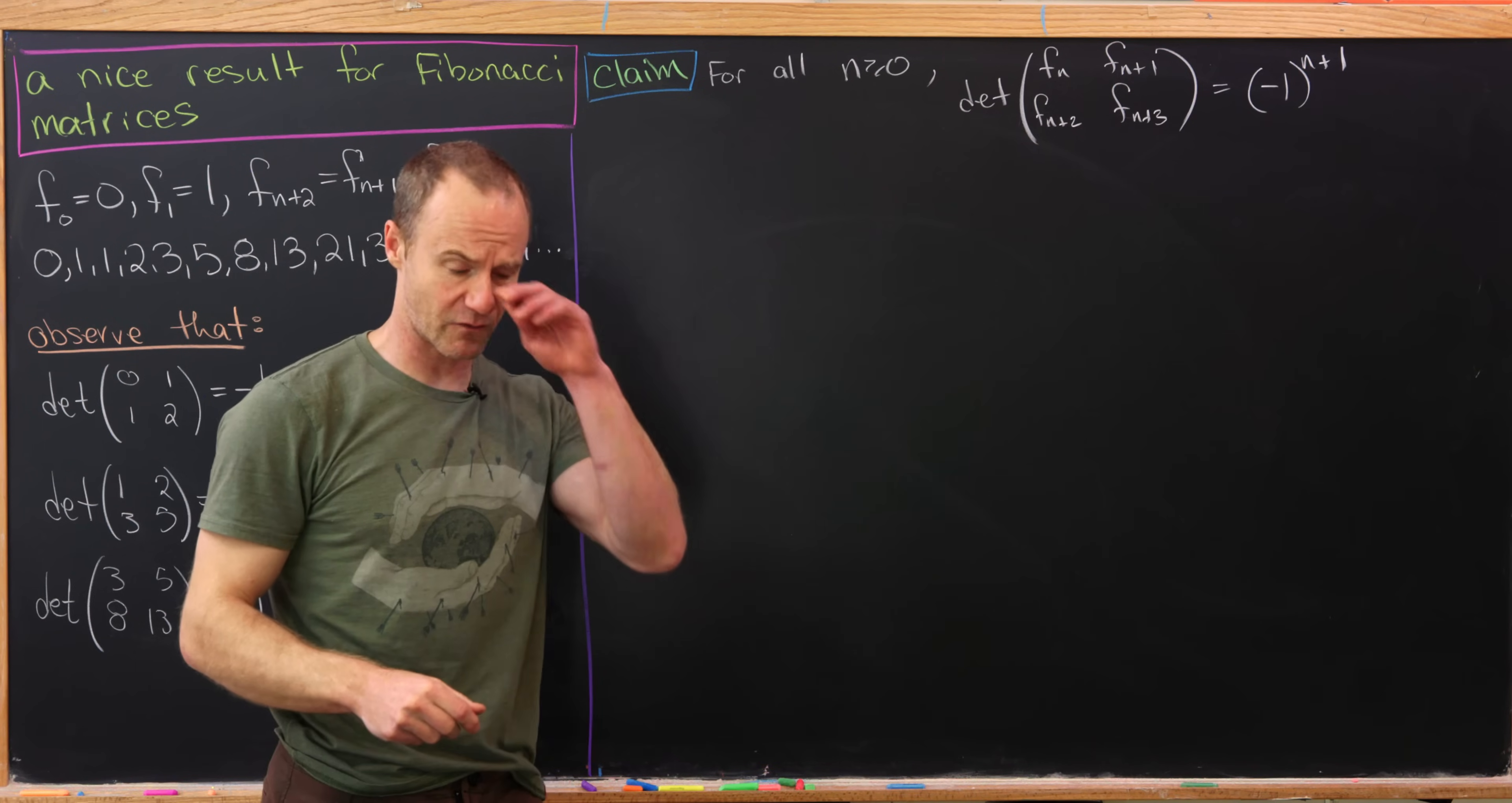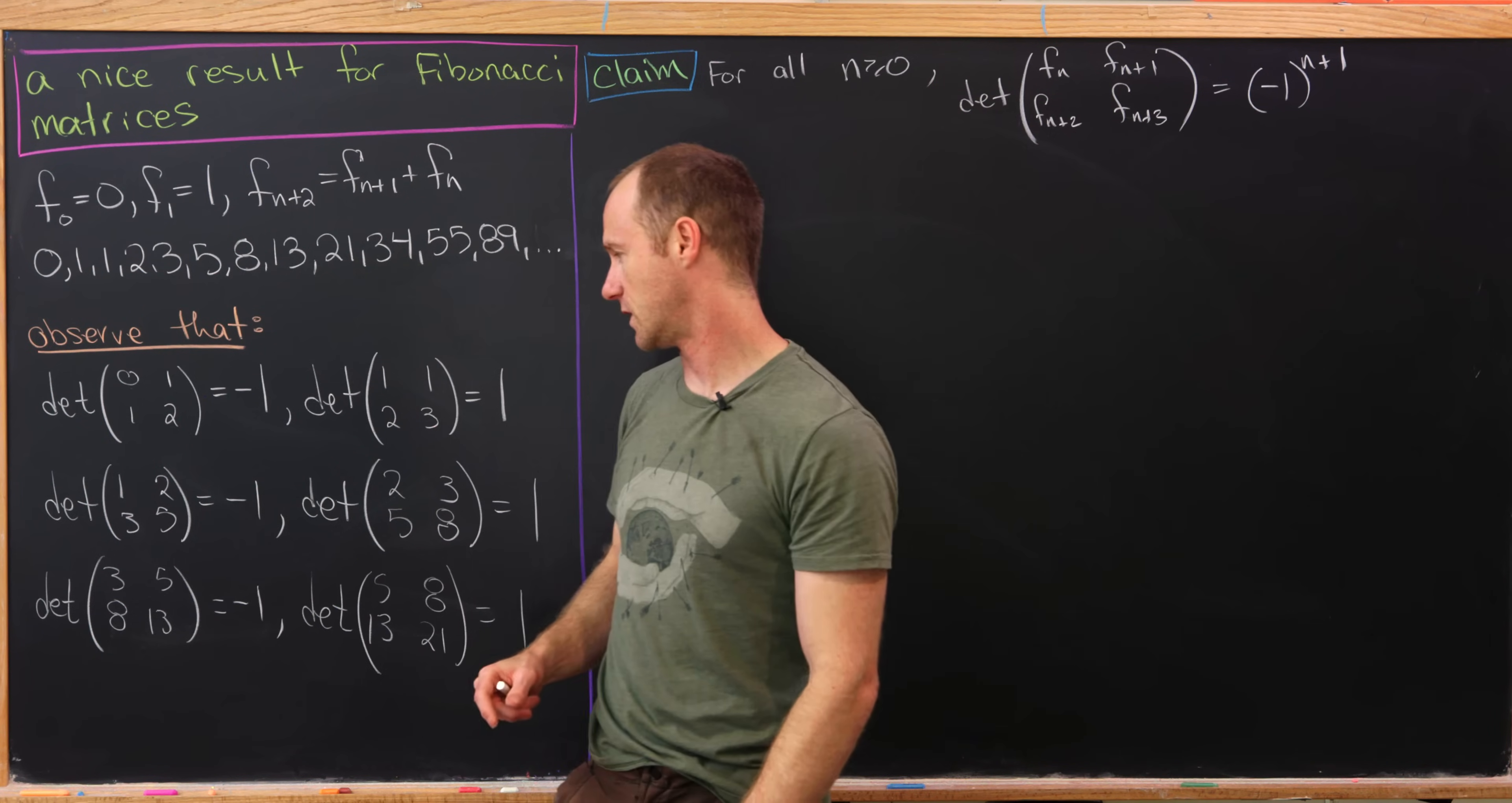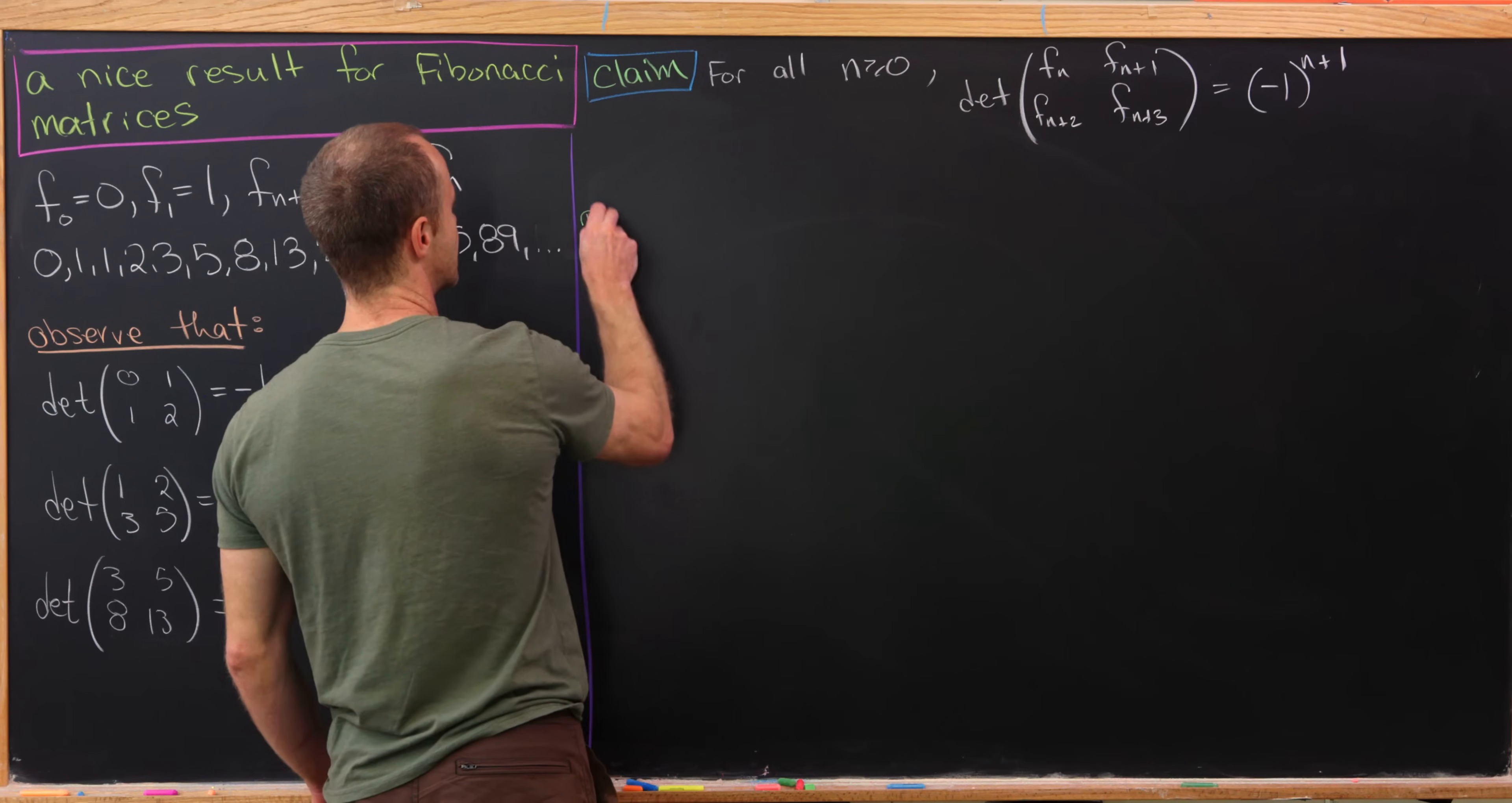So definitely negative 1 to the n+1 alternates, but why is that maybe the right exponent? Well, let's notice over here we're starting at the zeroth term, F0 is 0, and we have negative 1 to the 0+1. Here we're starting with the first term and we have negative 1 to the 1+1. Here we're starting with the second term, negative 1 to the 2+1, and so on. So that's a bit of an explanation or motivation for why this is the right formula.